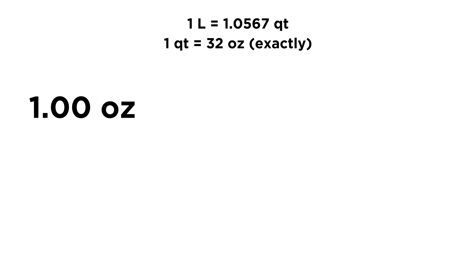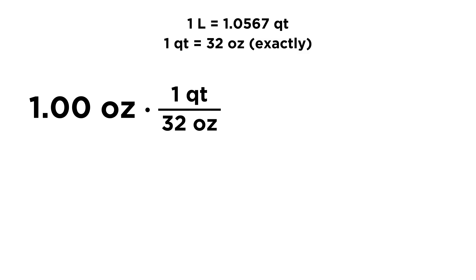So let's answer the first question. We want to convert 1.00 ounces into liters. We have some conversion factors to use. First, we want to cancel out ounces — we don't want ounces, we want liters. So let's use the conversion factor that has ounces in it: 1 quart equals 32 ounces. So let's multiply 1 ounce by 1 quart over 32 ounces.